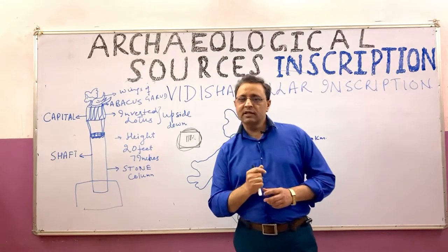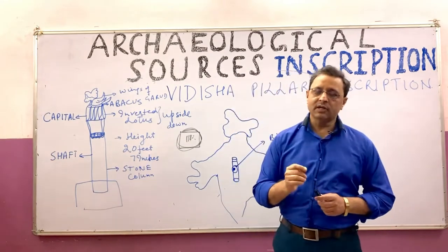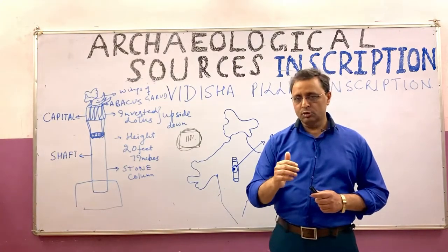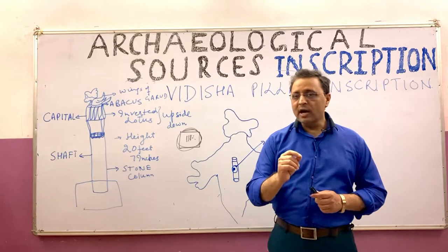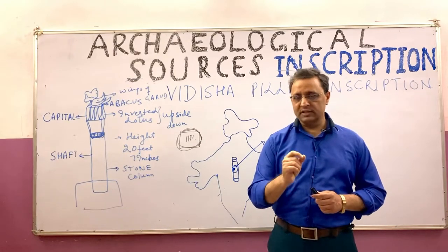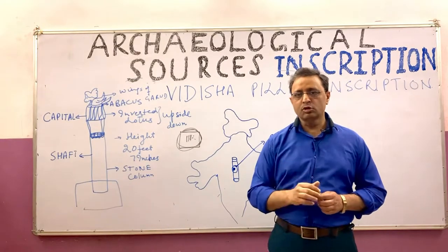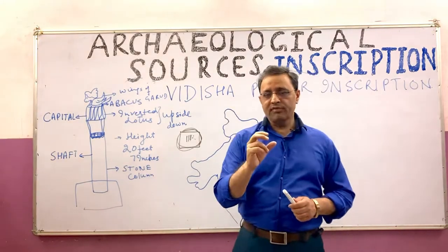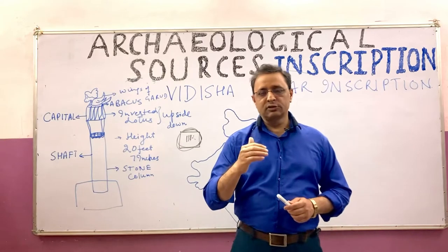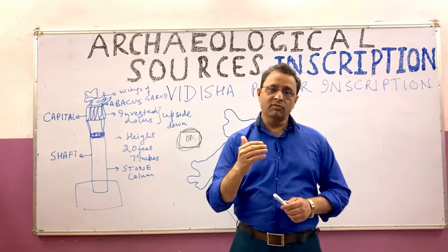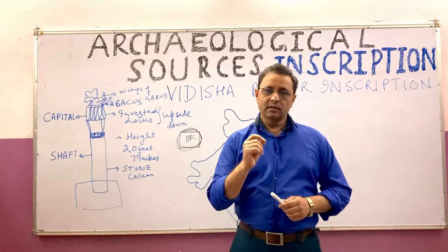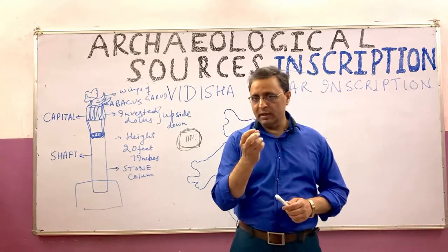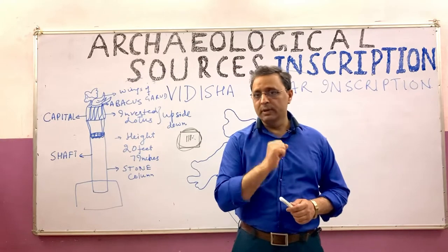The Vidisha Pillar Inscription is located in central India, in Madhya Pradesh, about 55 km from the capital Bhopal, in a place called Vidisha. It is also called the Garuda Pillar Inscription because Garuda is the king of birds — just as the lion is the king of animals, Garuda is king of birds.